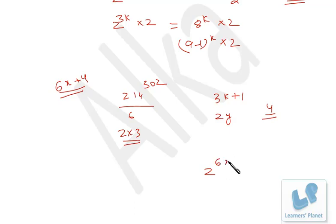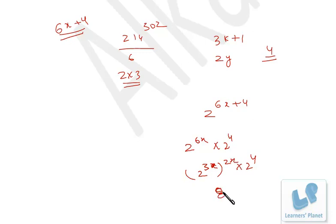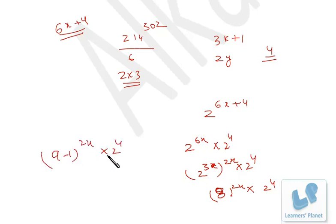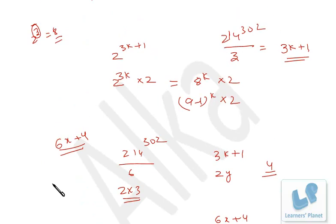Now the main problem: 2 raised to (214^302) can be written as 2 raised to (6x+4), which equals 2 raised to 6x times 2 raised to 4, or 8 raised to 2x times 2 raised to 4. Since 8 equals 9 minus 1, dividing by 9 gives remainder minus 1 raised to 2x. Since 2x is always even, minus 1 raised to an even power is 1. So 1 times 2 raised to 4 equals 16, and 16 divided by 9 gives remainder 7. The final answer is 7.